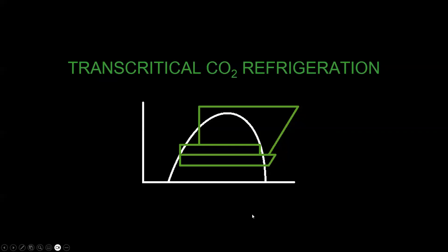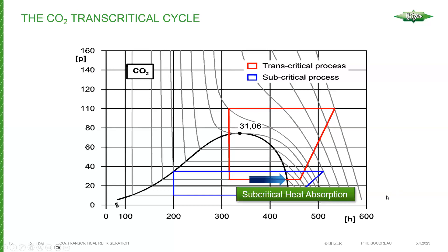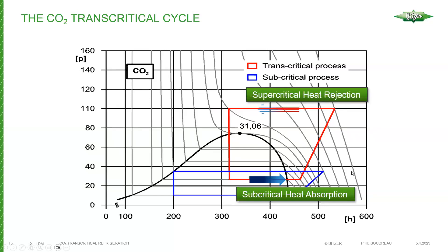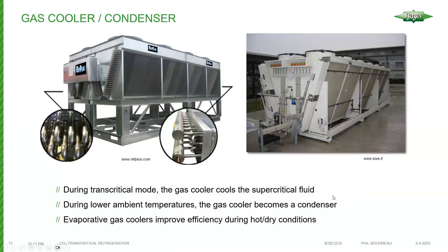Let's move on to transcritical CO2 refrigeration. In a basic single-stage transcritical cycle, the evaporator is in the two-phase region, so the evaporation process is subcritical. Whether it's a subcritical or transcritical system, the evaporator is always operating subcritically. What makes the transcritical system different is that we transcend the critical point into the supercritical fluid region. Heat rejection in transcritical is a bit different than what we're used to with HFC systems and ammonia.